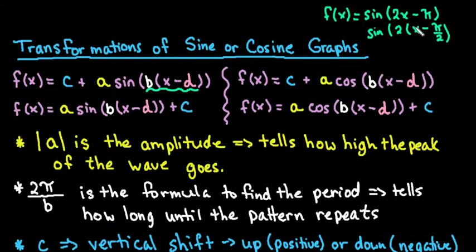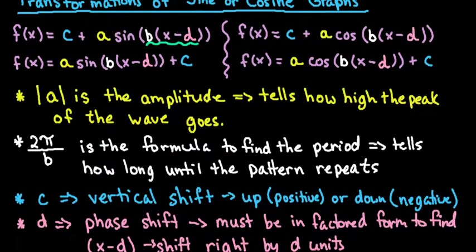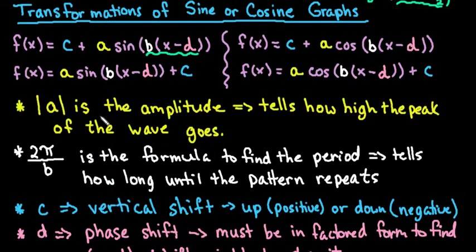So it is very important that you understand that, because if you don't understand this process, then it will influence your shifts, which we'll talk about in a minute. So make sure that this is in factored form and not written as 2x - π.